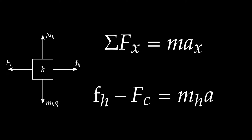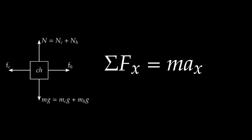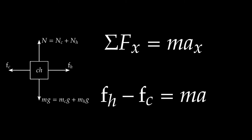For the third free body diagram — the combined system — Newton's second law horizontally gives: friction force on the horse fH minus friction force on the cart fC equals M times acceleration. Here we see the two friction forces in competition. If they're equal, acceleration is zero — constant velocity or rest. For positive acceleration, the horse's friction force must win over the cart's. For negative acceleration, the cart's friction force must be greater.